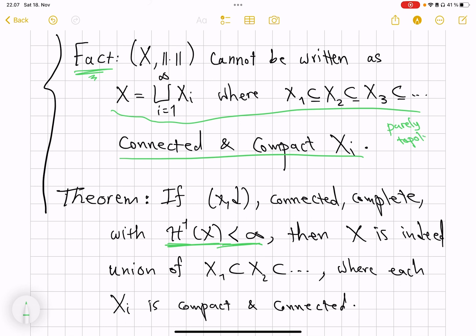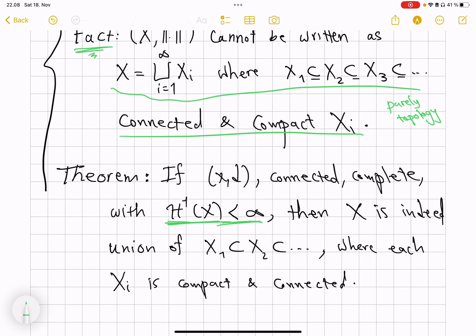But remember that if you homeomorphically change X, this property that whether a space can be written that way is a purely topological property. So if in one topology you can write X as this way, then in any other homeomorphic topology you can do that the same.